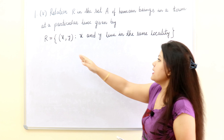To be reflexive, the condition is that (X,X) should belong to R. If we expand this, we get: X and X live in the same locality. This is obvious. That's why this relation will be reflexive.